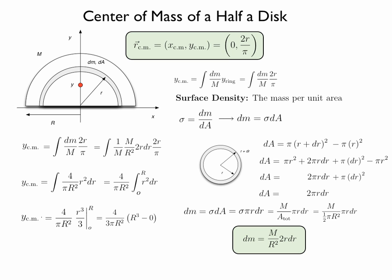That gives us 4 over 3 pi, the radius of the disk squared, times R cubed minus 0, or the final expression for the vertical position of the center of mass of a half a disk is 4 over 3 pi times R.